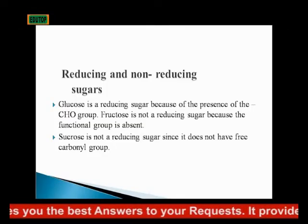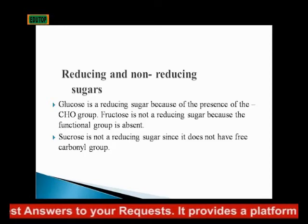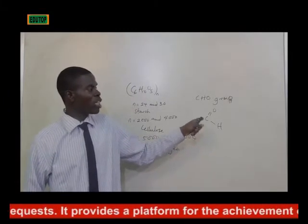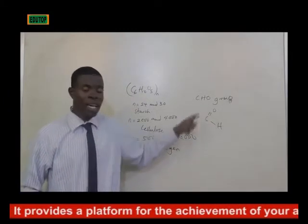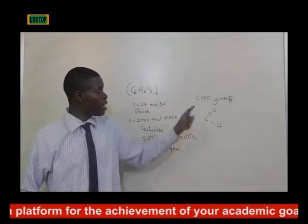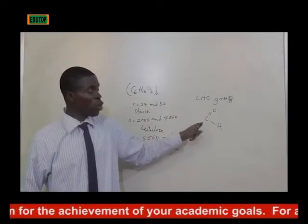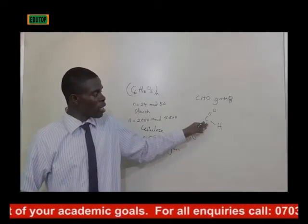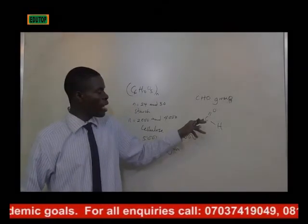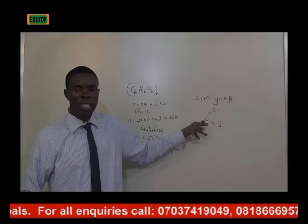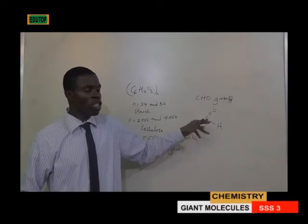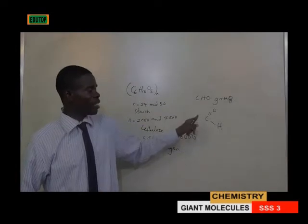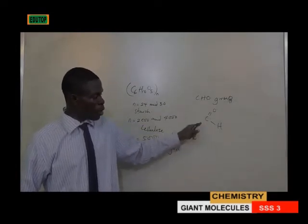Sucrose is not a reducing sugar since it does not have a free carbonyl group. It has a carbonyl group, but that carbonyl group is not mobile — it is fixed. That is why sucrose is said to be a non-reducing sugar: because the carbonyl group is fixed and not mobile.